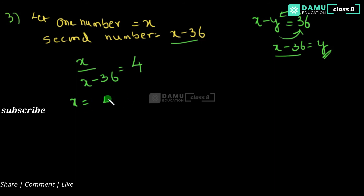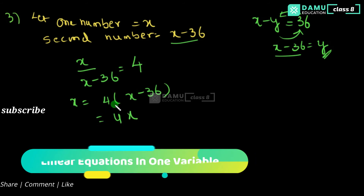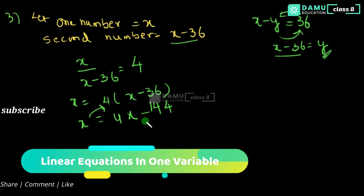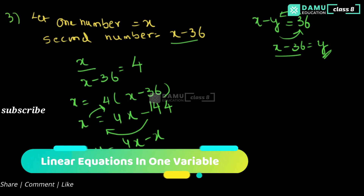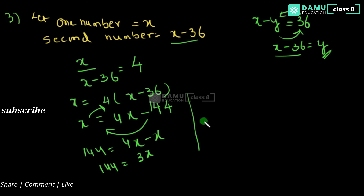So x equals 4 into (x minus 36), giving 4x minus 144. Shift x to the left side: 144 equals 4x minus x, which is 3x. So 3x equals 144, and x equals 144 by 3, which gives x equals 48.